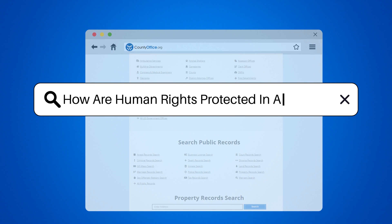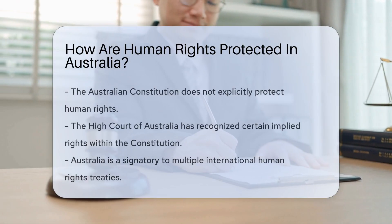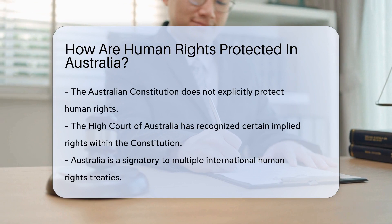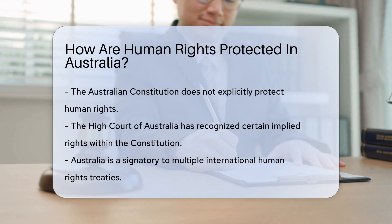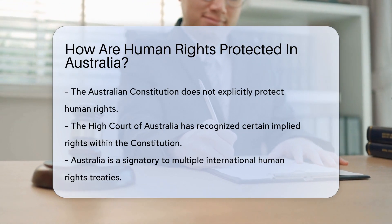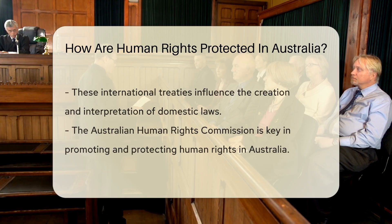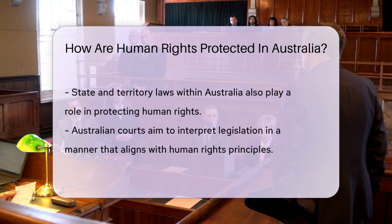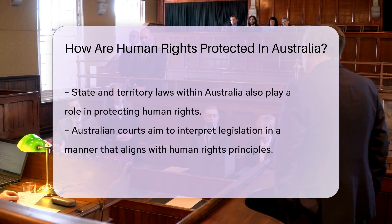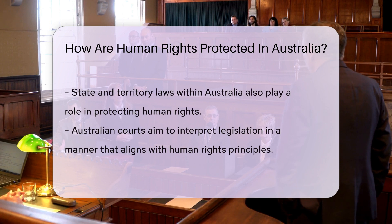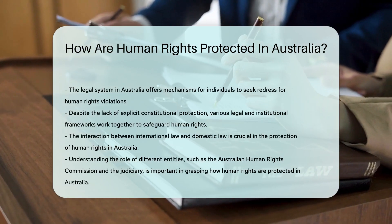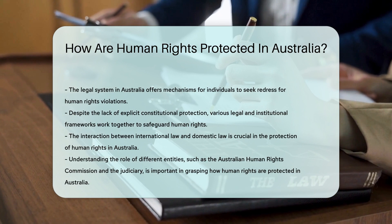How are human rights protected in Australia? Australia protects human rights through various mechanisms. The Australian Constitution does not explicitly protect human rights; however, the High Court has recognized some implied rights. Australia is a party to several international human rights treaties, which influence domestic law. The Australian Human Rights Commission plays a vital role in promoting and protecting human rights in the country. State and territory laws also contribute to safeguarding human rights. Courts in Australia interpret legislation in line with human rights principles. The Australian legal system provides avenues for individuals to seek redress if their human rights are violated.